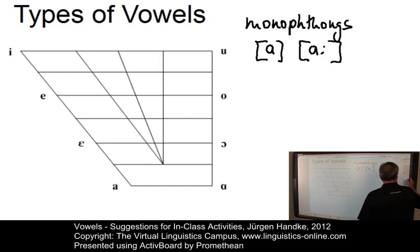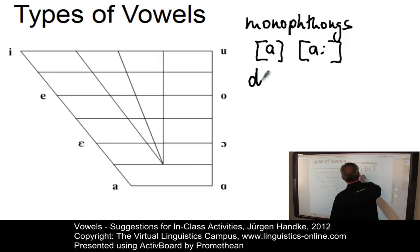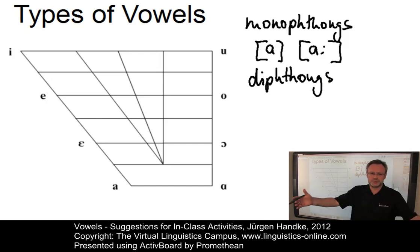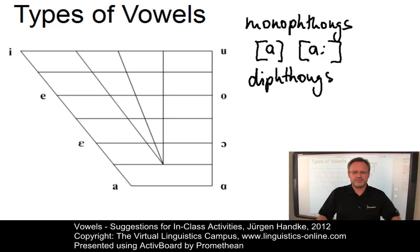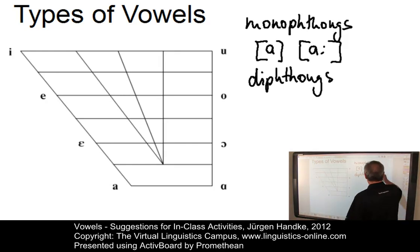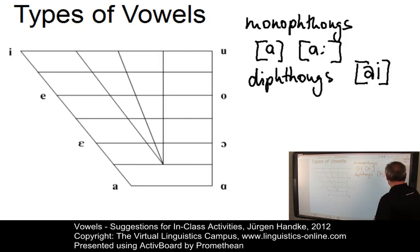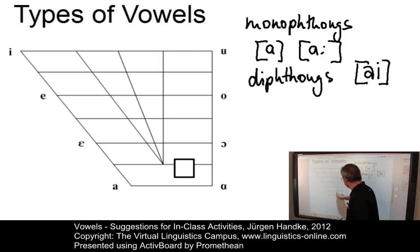The next type of vowels is referred to as diphthongs, and again, two H's in the word 'diphthong' are essential. Ask your students whether they know a diphthong — in most cases they will come up with the diphthong 'aɪ', which can very well be used for the illustration of what diphthongs are. You should first of all tell your students that diphthongs consist of two parts.